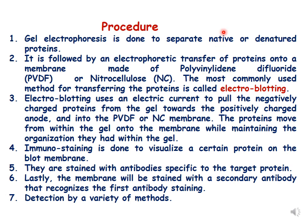In the detailed procedure, the first step is gel electrophoresis to separate native or denatured proteins — specifically polyacrylamide gel electrophoresis, or PAGE. The second step is electrophoretic transfer of proteins into a membrane made of PVDF (polyvinylidene difluoride) or nitrocellulose. For Western blotting, the most commonly used transfer method is electro blotting, rather than capillary transfer as used in Southern and Northern blotting.